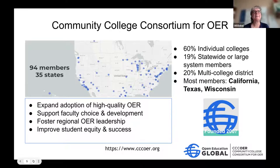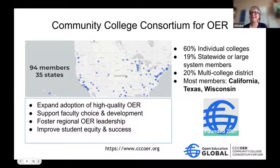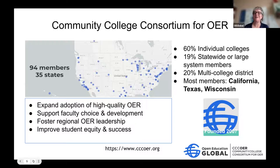A quick look at our membership: about 20% represent statewide or system memberships — Judith as executive director of Digitex is one of those — 20% are multi-college districts, and about 60% of our members are individual colleges doing open education work. California, Texas, and Wisconsin are the states within our consortium with the most members.